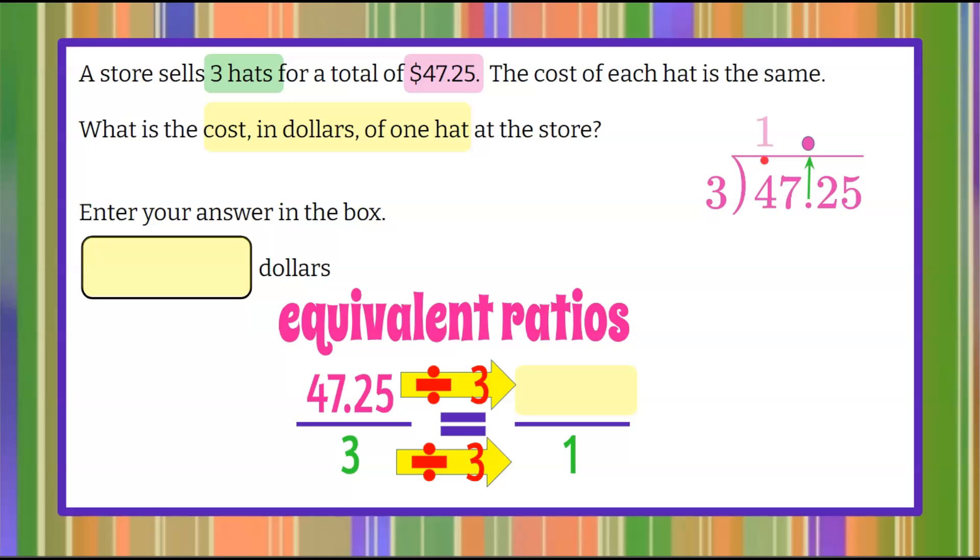Three goes into four once. One times three is three. Four subtract three is one. Let's bring down our seven.